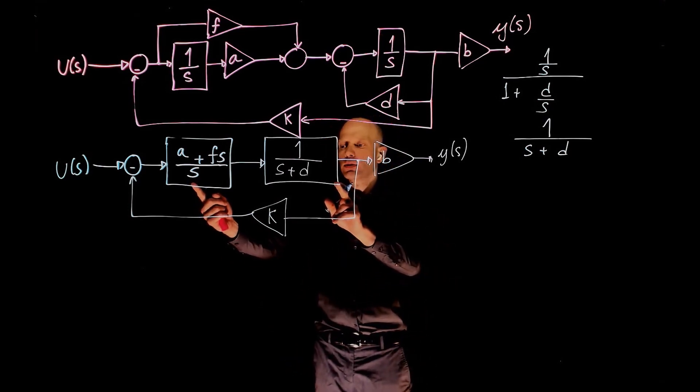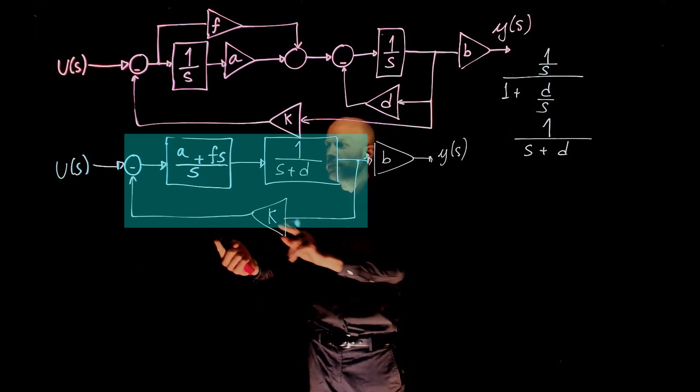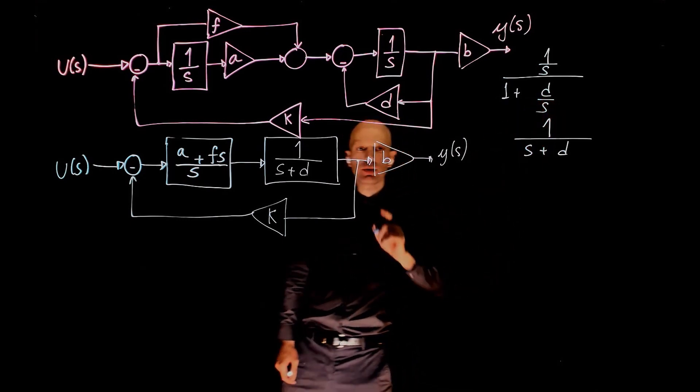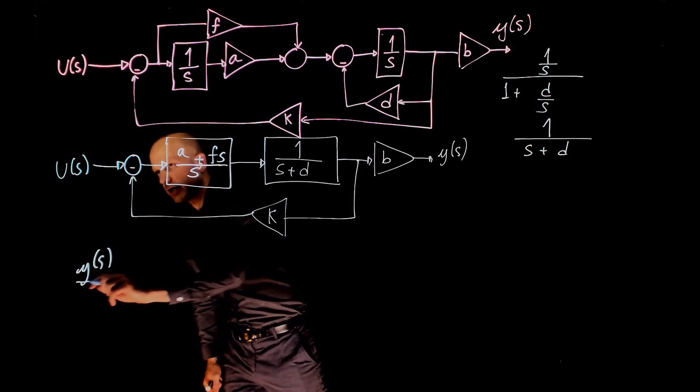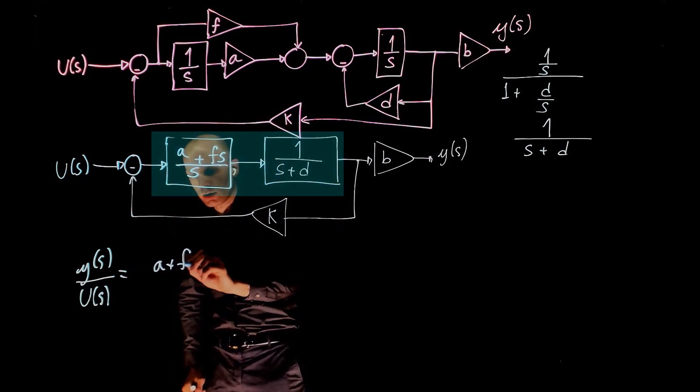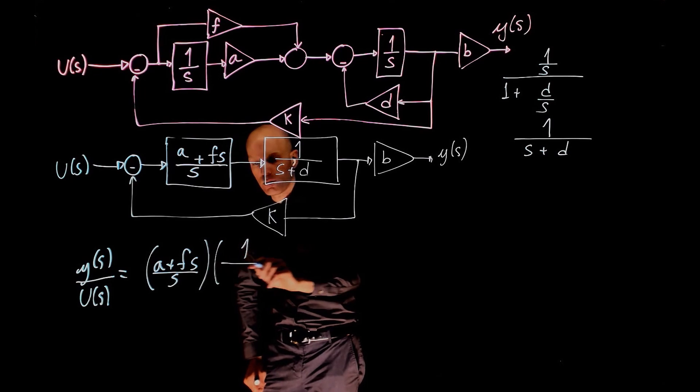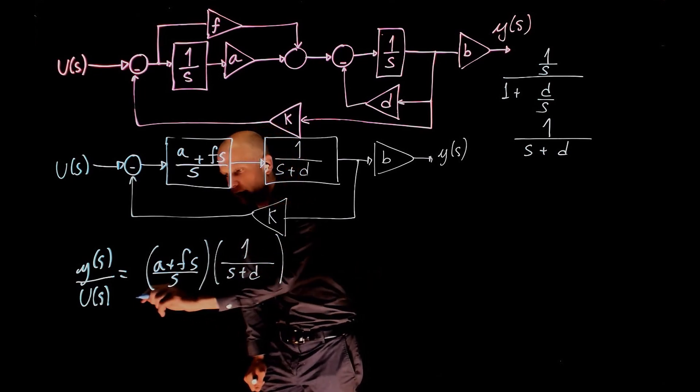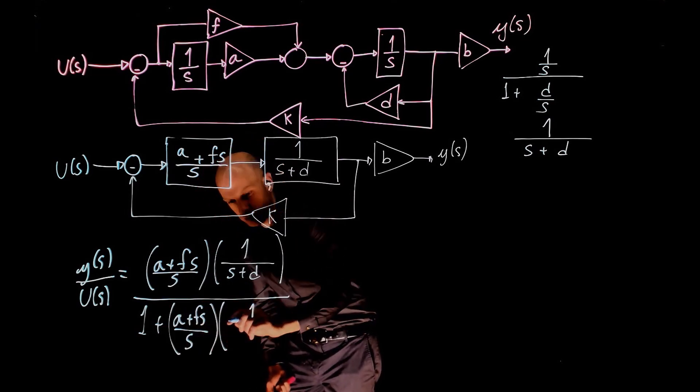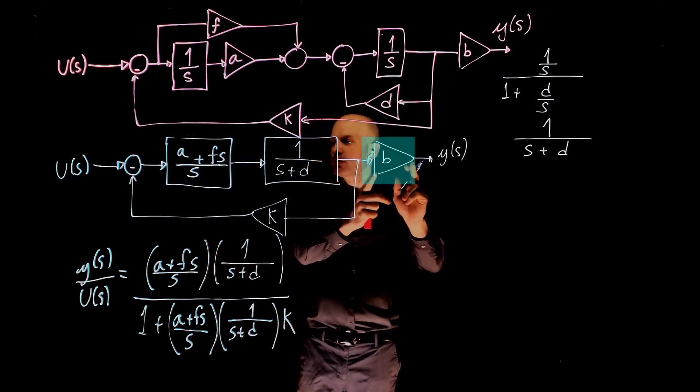Now we can multiply these two blocks and eliminate the negative feedback loop. Using the same strategy, we can now do y of s divided by u of s. The main line function here, a plus fs over s times 1 over s plus d divided by 1 plus the main line function times the feedback function k. So this is for this part of the diagram. And now everything is multiplied by b.